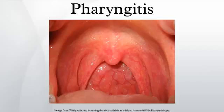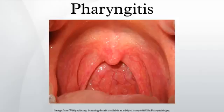Fusobacterium necroforum are normal inhabitants of the oropharyngeal flora. Occasionally, however, it can create a peritonsillar abscess. In 1 out of 400 untreated cases, Lemierre's syndrome occurs. Diphtheria is a potentially life-threatening upper respiratory infection caused by Corynebacterium diphtheriae, which has been largely eradicated in developed nations since the introduction of childhood vaccination programs, but is still reported in the Third World and increasingly in some areas in Eastern Europe. Antibiotics are effective in the early stages, but recovery is generally slow.